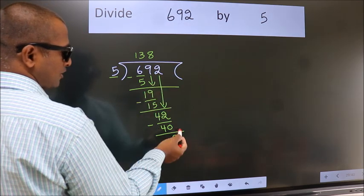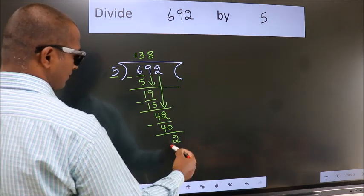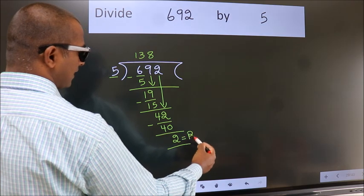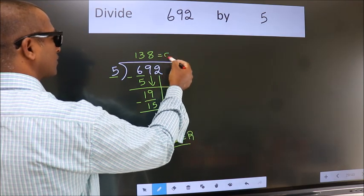No more numbers to bring down. So we stop here. This is our remainder. This is our quotient.